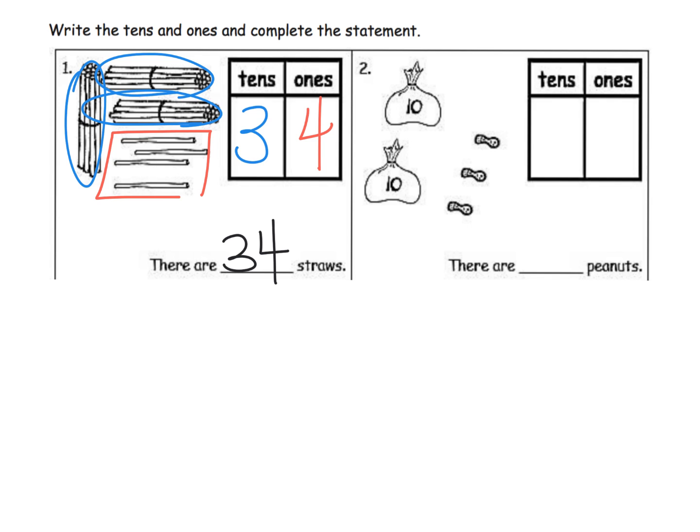Similarly, right here we've got a 10 and a 10, so we have two tens, and then we've got three individual peanuts. So there are 23 peanuts.